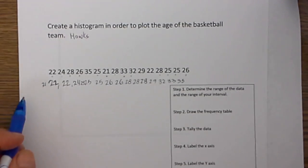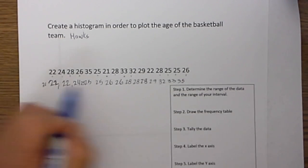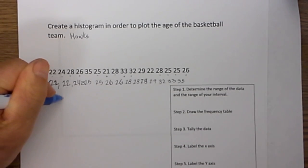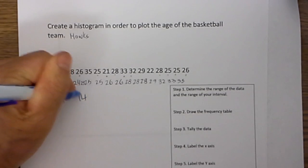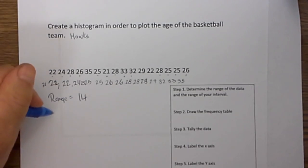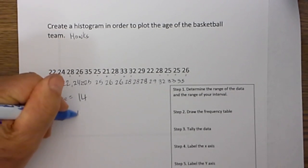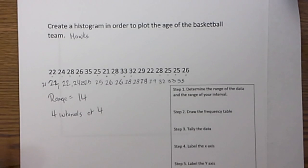The range is 35 minus 21, so our range equals 14. So I will have 4 intervals of 4.